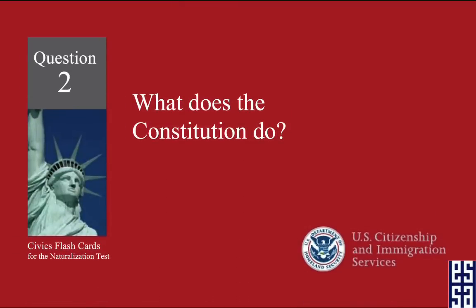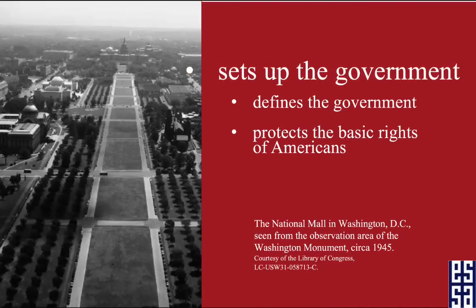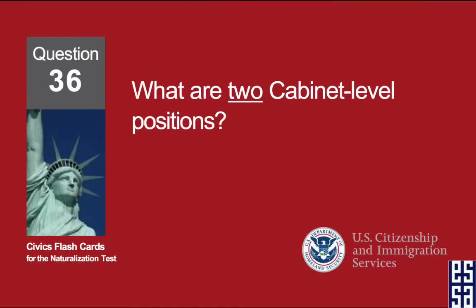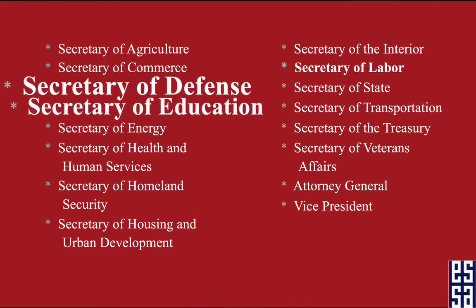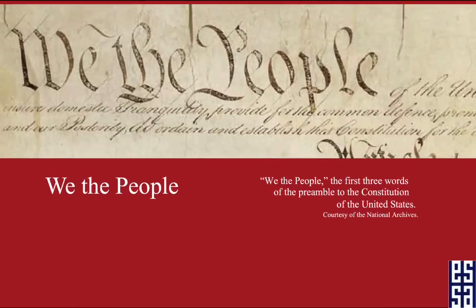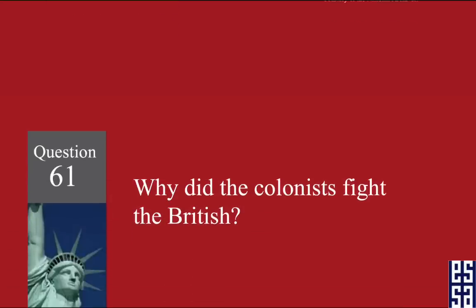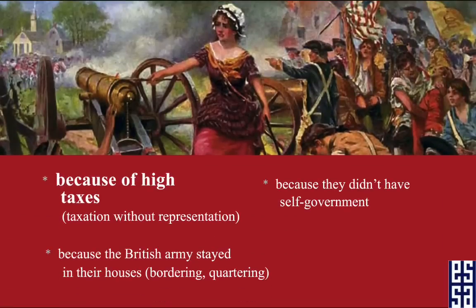What does the Constitution do? Sets up the government. What are two cabinet-level positions? Secretary of Defense. Secretary of Education. The idea of self-government is in the first three words of the Constitution. What are these words? We the people. Why did the colonists fight the British? Because of high taxes.